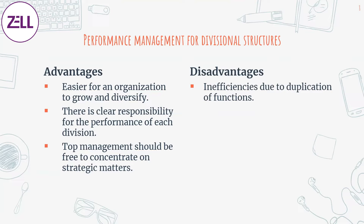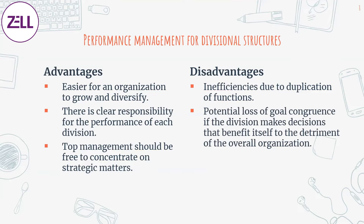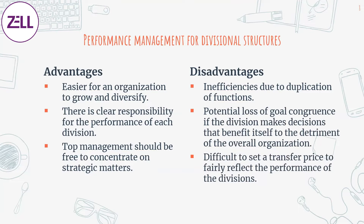Disadvantages of divisional structure: inefficiencies due to duplication of functions — every product will have its own marketing, its own sales and operations, making roles duplicate. Loss of goal congruence is always a disadvantage — managers will take decisions beneficial for their geographical unit but harmful for another unit in the same company. Transfer pricing is an example: a divisional manager will charge highly to another division and not care, which is a big disadvantage.